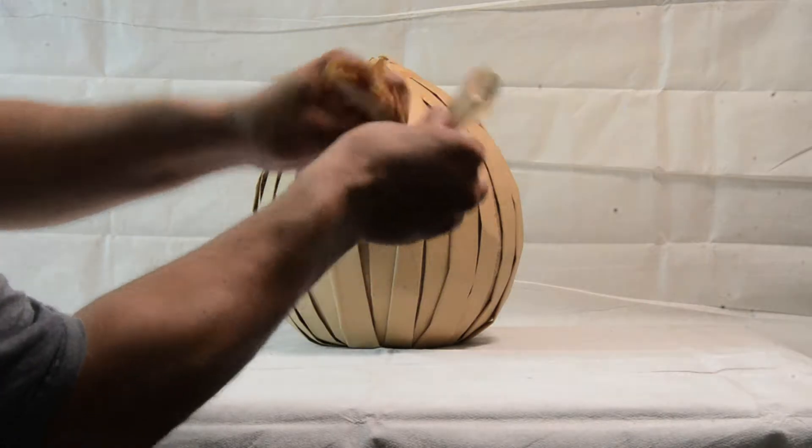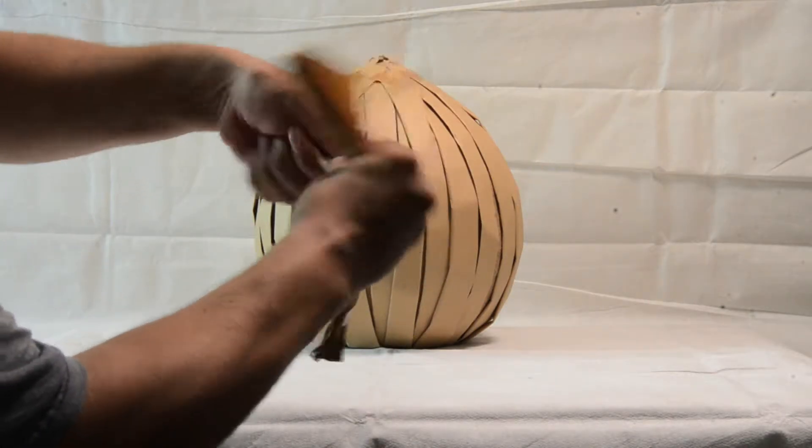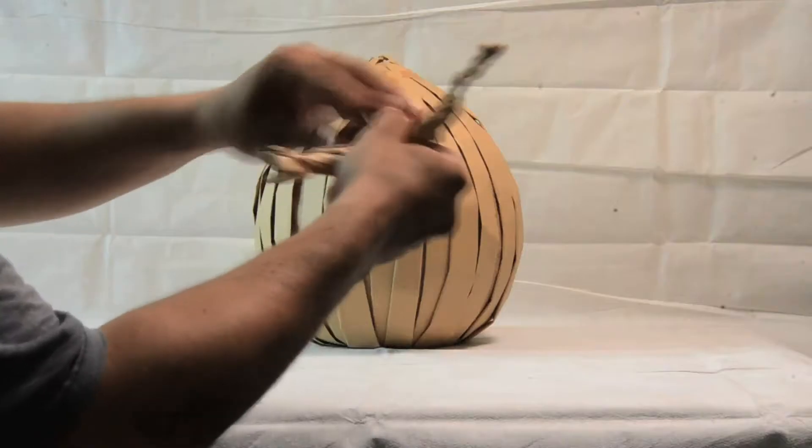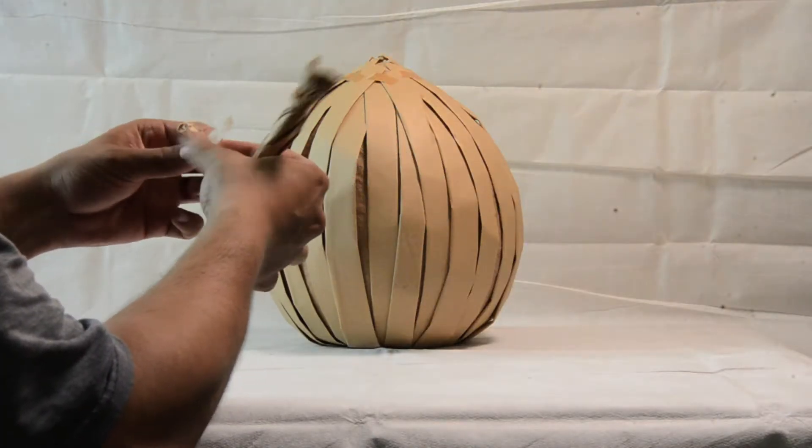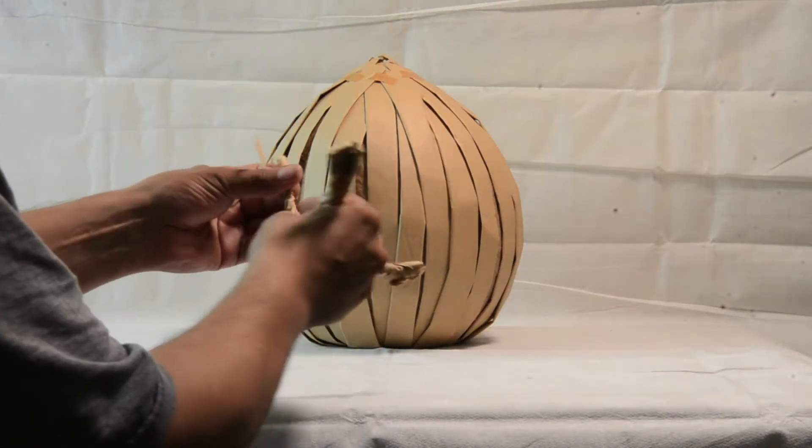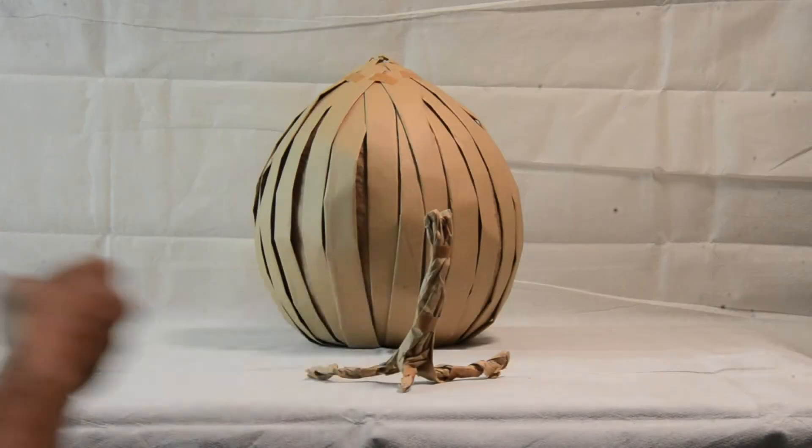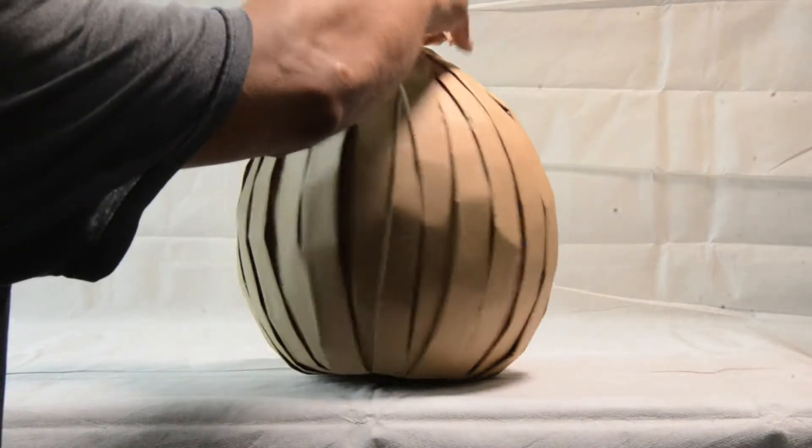Next we're going to take this end, split it, twist it and then tape it up. Once it's done we can now tape it to the top.